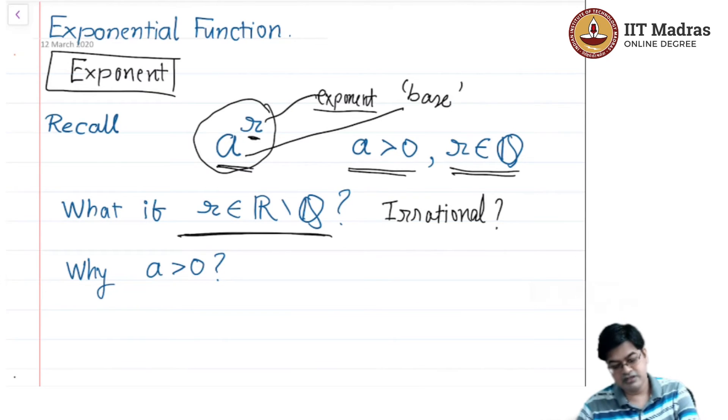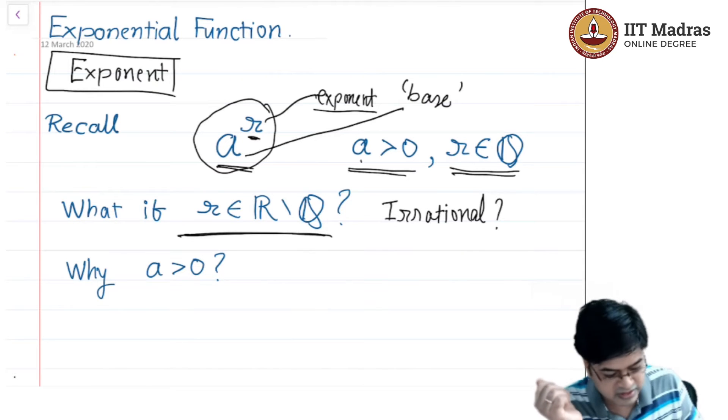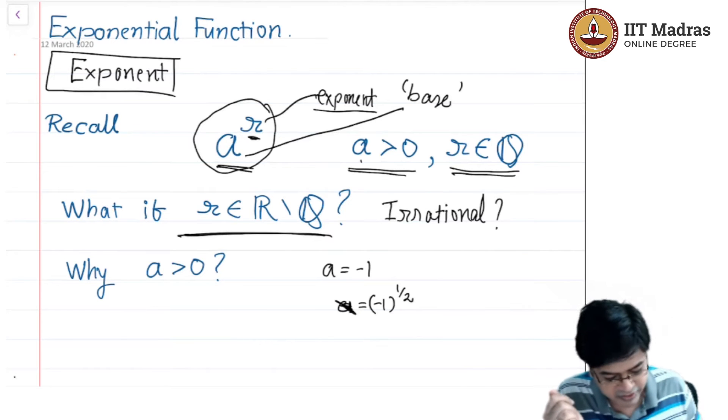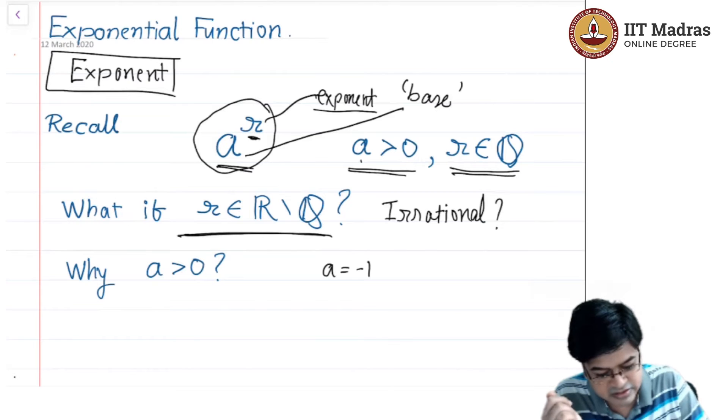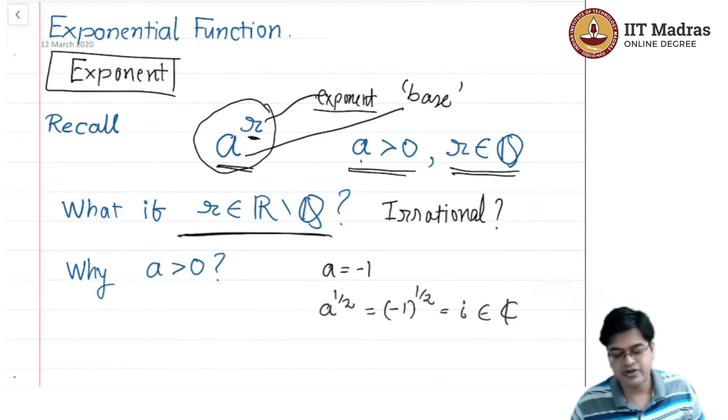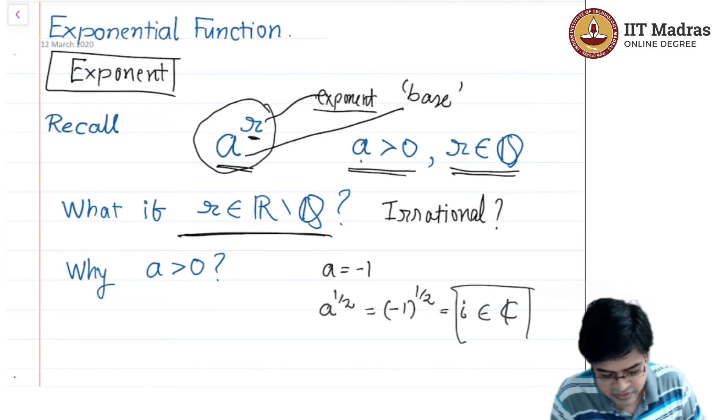The question is why is a greater than 0? Let's say a equals minus 1, and if you raise a equals minus 1 to the power half, which is a rational, a^(1/2) equals i, which belongs to the set of complex numbers, but I do not want to deal with complex numbers. So I am avoiding a to be less than 0. In general, you can define a to be a negative number and then deal with complex numbers, but we do not want to indulge into that conversation.